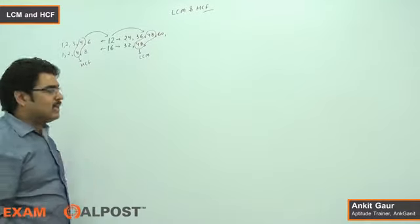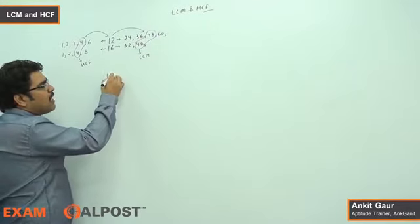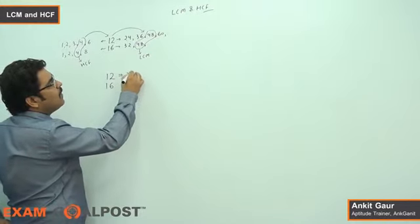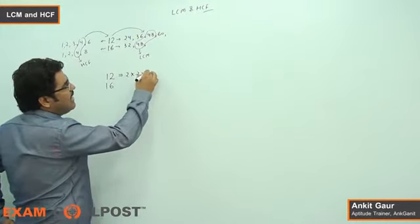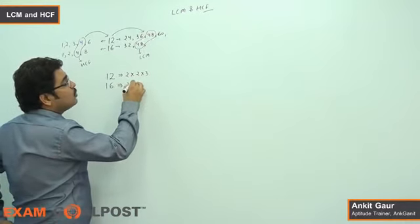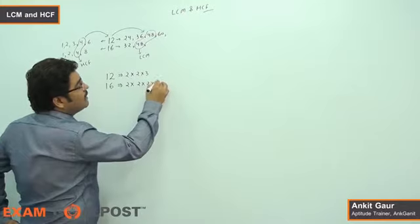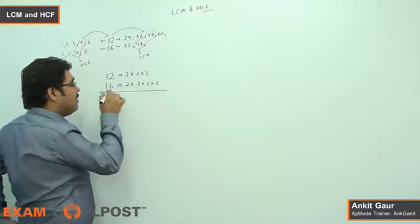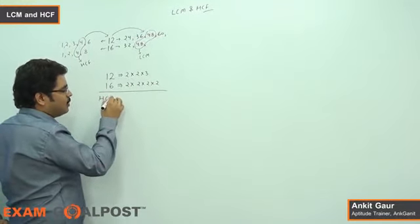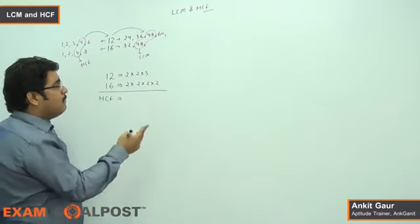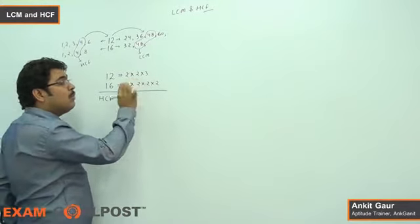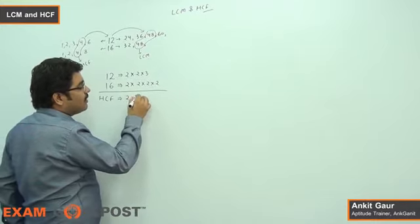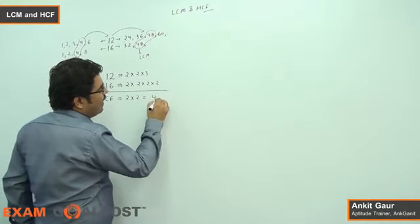So basically, how do we start? You have 12 and 16. Let's factorize 12: 12 equals 2 × 2 × 3. And 16 equals 2 × 2 × 2 × 2. The highest common factor means the number that is common in both factorizations. 2 × 2 is common in both 12 and 16. So the highest common factor is 2 × 2, which equals 4.